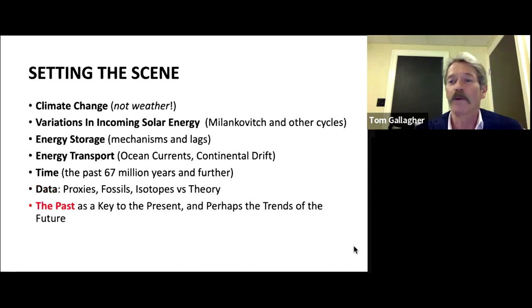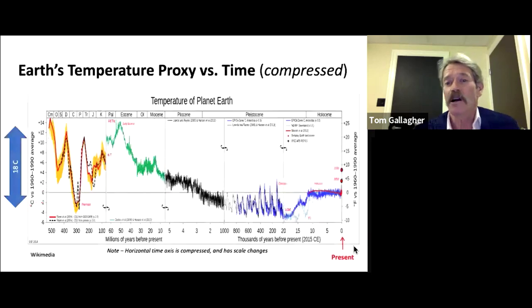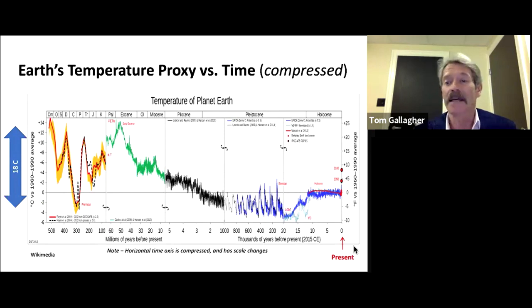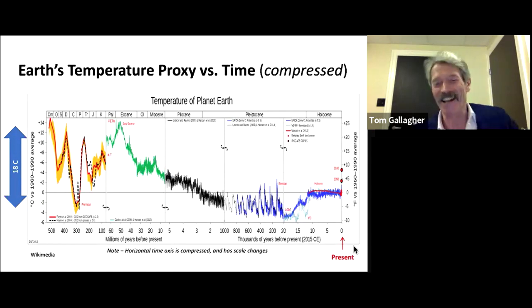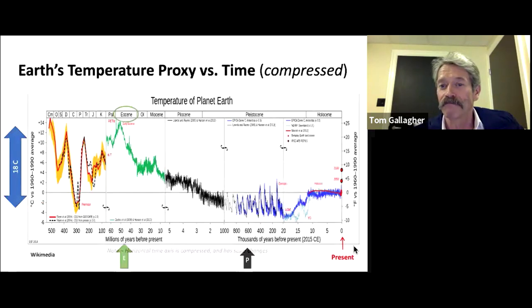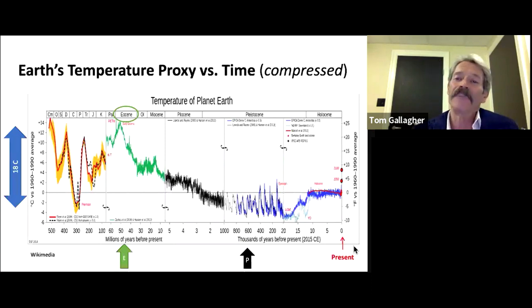By examining the past, we will learn more about the present and be better equipped to forecast the future. This chart plots historical temperature of the earth using a proxy. Note that the horizontal time axis is compressed and has several timescale changes. The present day is on the right, very much expanded, and 500 million years ago is on the left side. An 18-degree Celsius change in temperature is illustrated on the vertical axis. Note the green Eocene E arrow as a reference point for later, at 50 to 60 million years ago, just after the dinosaurs went extinct. Note there has been a significant temperature reduction since the Eocene.